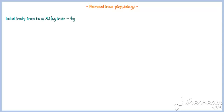Total body iron content in an average 70 kg person is about 4 grams. The vast majority of this iron, about 2,500 mg, is in the erythrocytes in the form of hemoglobin. About 4 mg of iron is circulating in plasma.